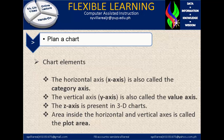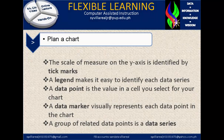Let's move on to chart elements. The horizontal axis, or x-axis, is also called the category axis. The vertical axis is also called the value axis. The z-axis is present in 3D charts. The area inside the horizontal and vertical axis is called the plot area. The scale of measure on the y-axis is identified by tick marks — a thick, heavy, bold mark.